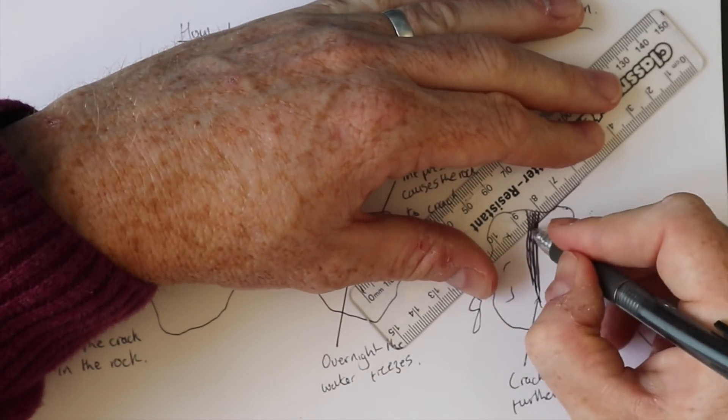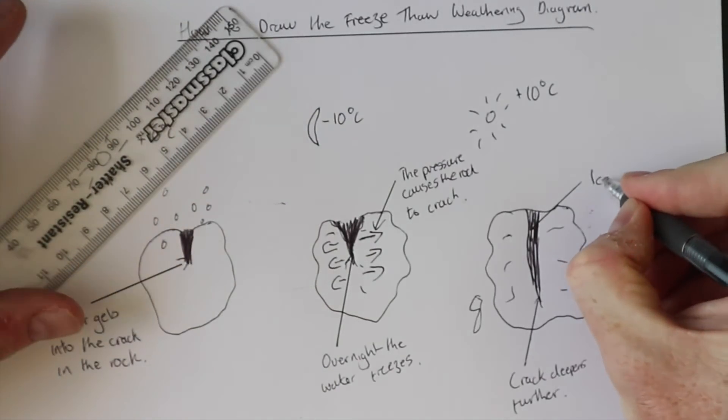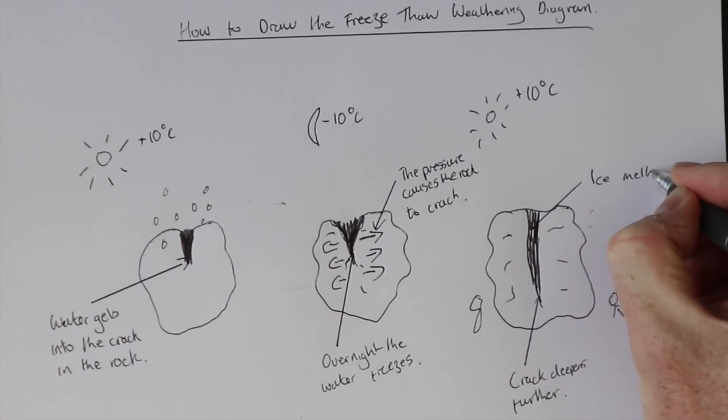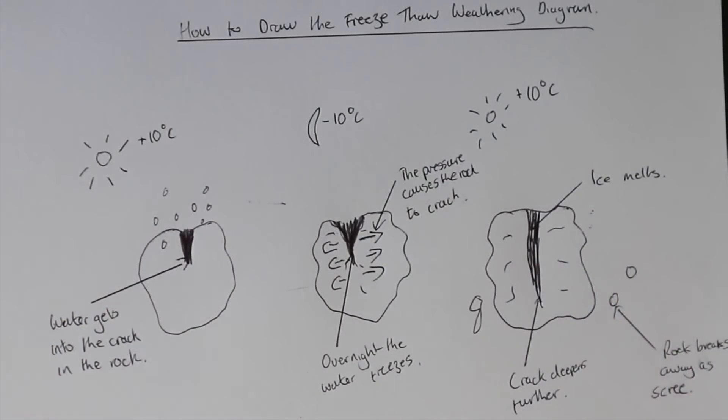You might also write in there that the ice melts. And that's how you do the diagram for freeze-thaw weathering.